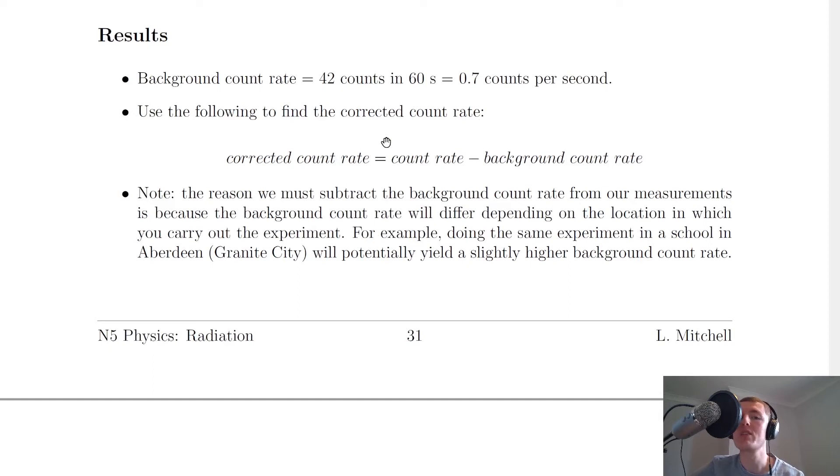We can then use the following to find the corrected count rate. So the corrected count rate would be the count rate minus the background count rate. And the reason we're correcting the count rate is given here. So it says the reason we must subtract the background count rate from our measurements is because the background count rate will differ depending on the location in which you carry out the experiment.